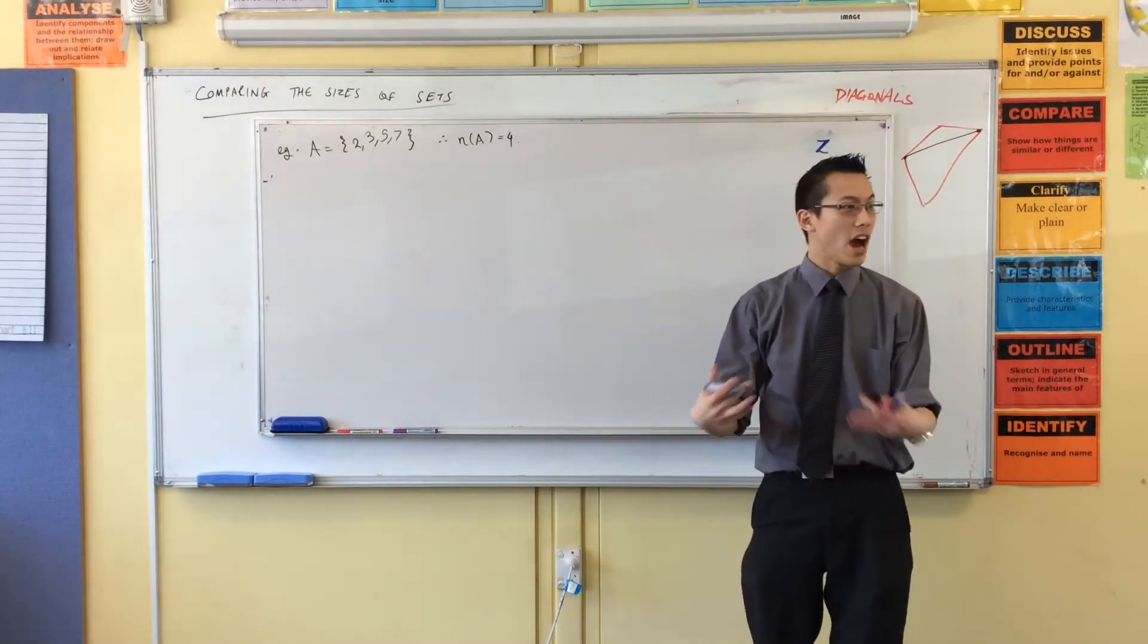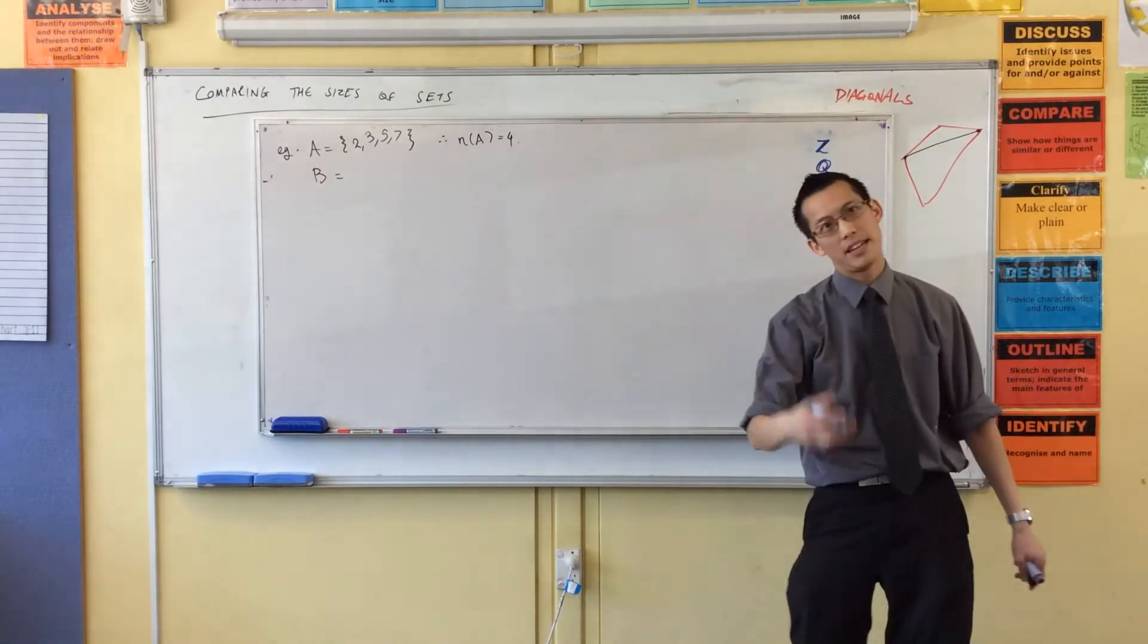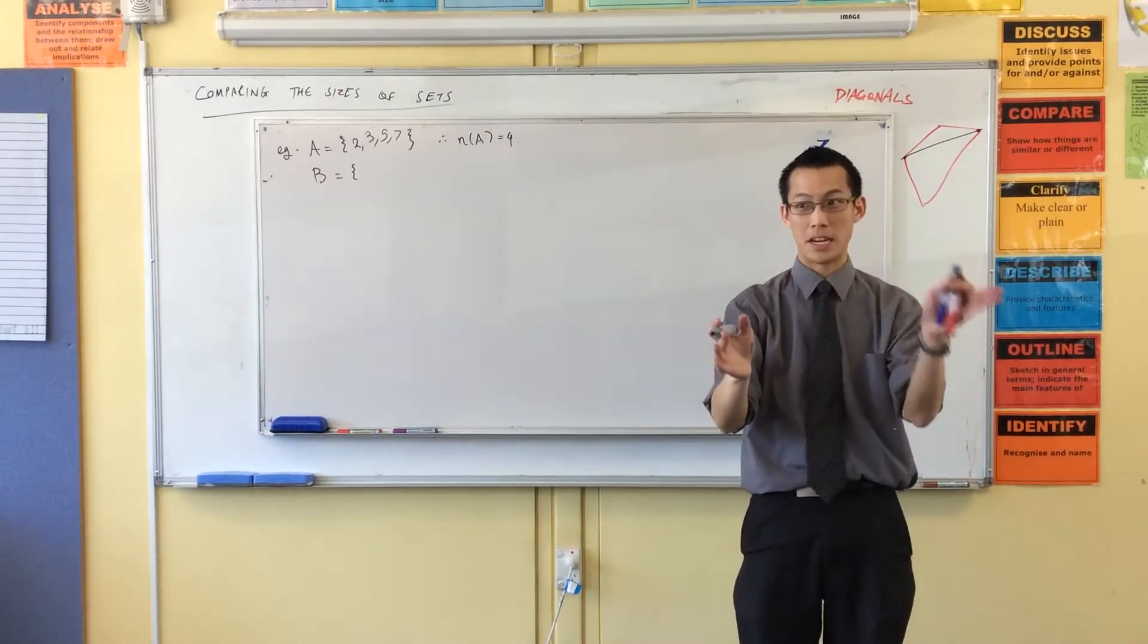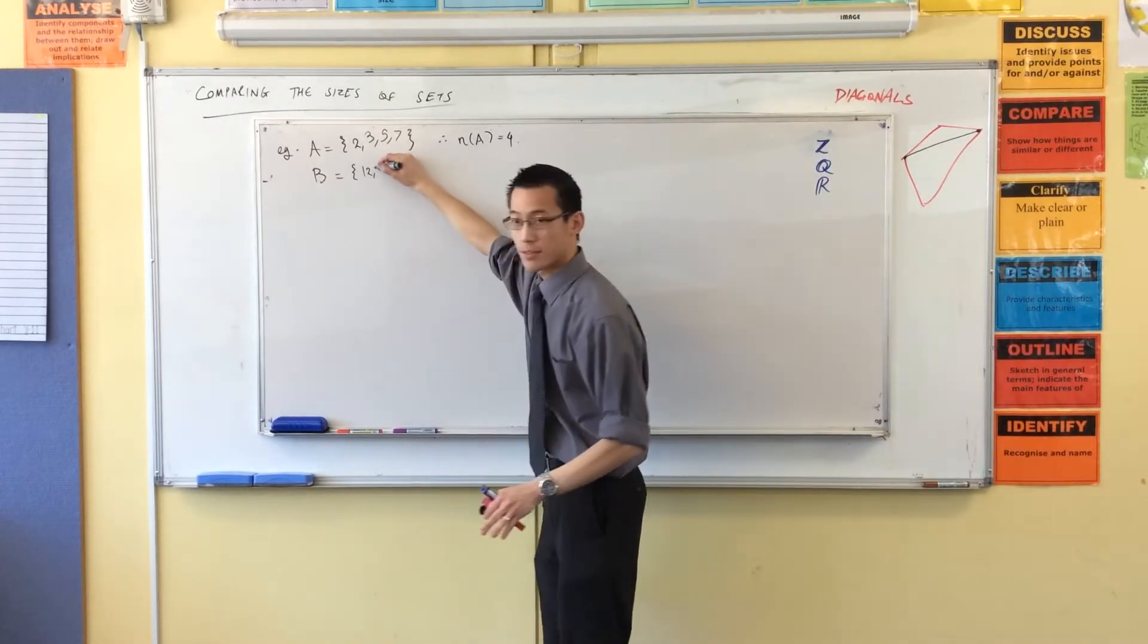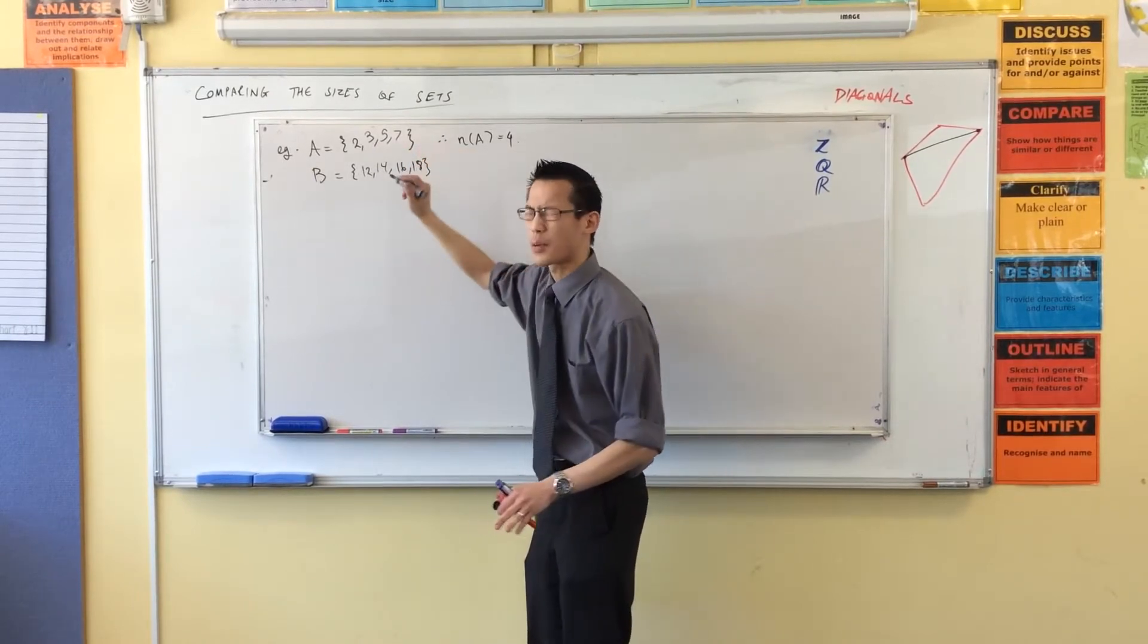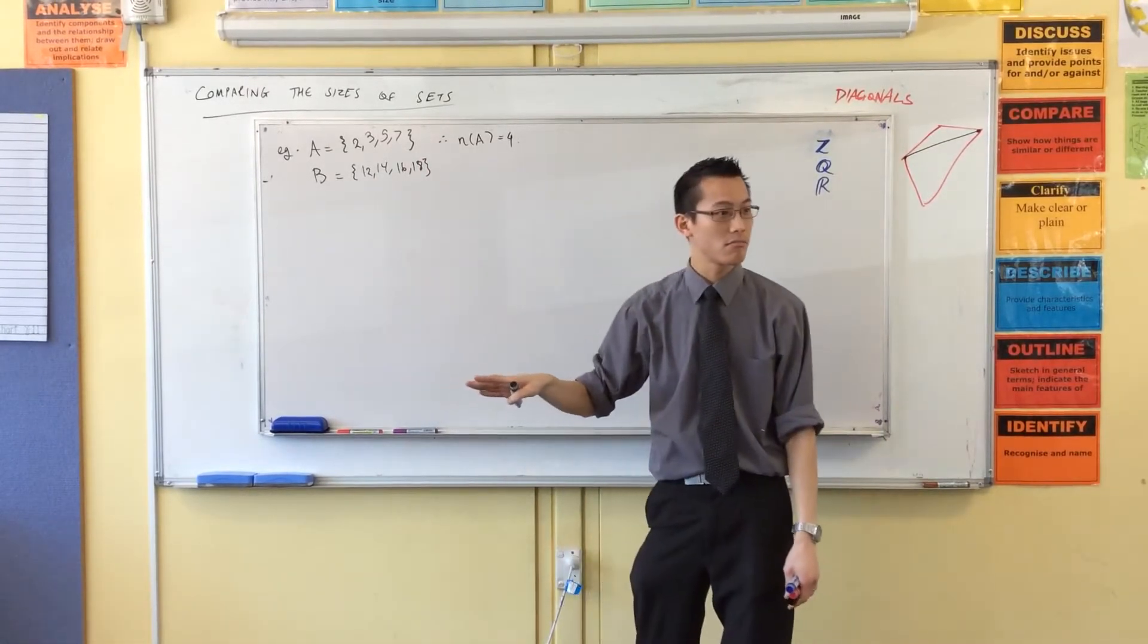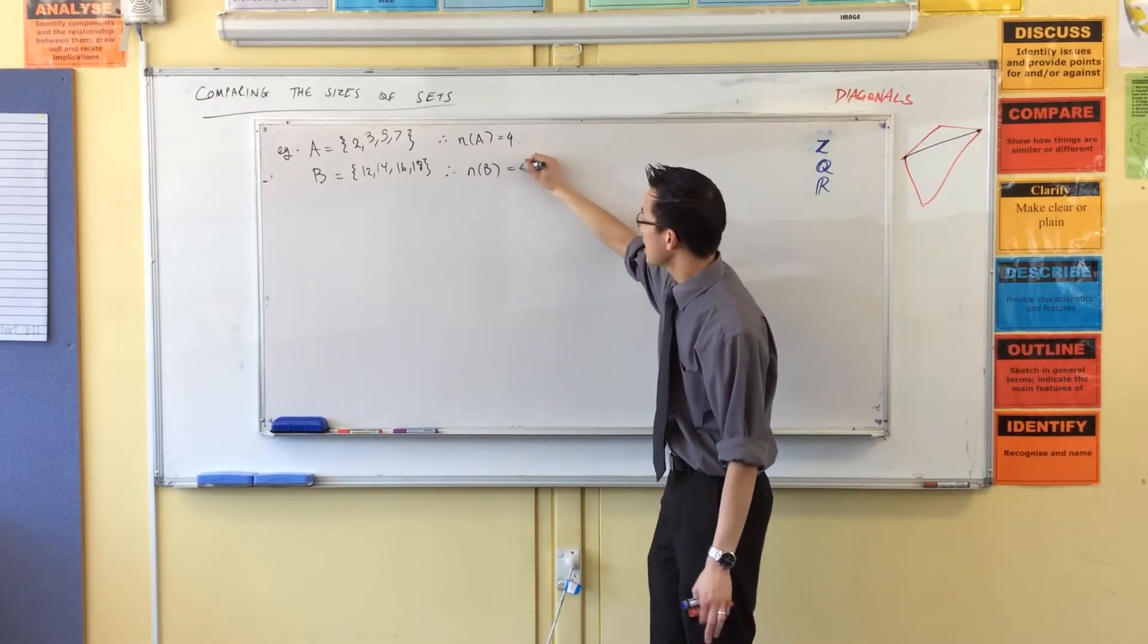Now I can name any other set. For instance, let's call B the even numbers between (not inclusive) 10 and 20. Can we do that? I think it'd be 12, 14, 16... sorry, I meant to say between 10 and 20. So there's the even numbers between 10 and 20. Therefore, the size of B is also four.